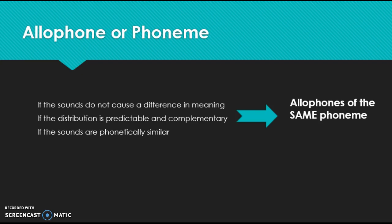If the distribution is predictable and complementary, like we saw with the phoneme ku, we can predict where the other variant's going to be. And we also expect the sounds to be phonetically similar.